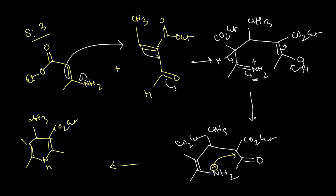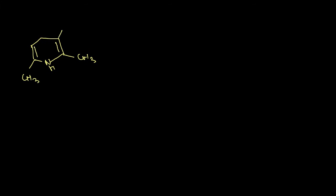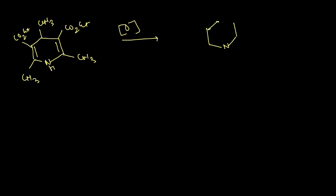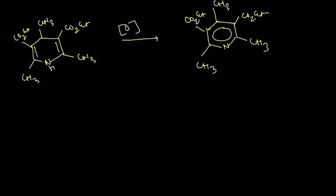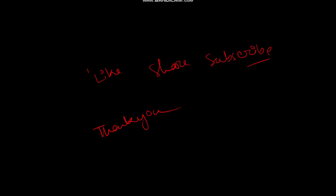With CO2Et groups on the ring, to aromatize the ring we need to oxidize it. After oxidation, we obtain the final Hantzsch pyridine product with NH, CH3, CH3, and CO2Et substituents. If this video was helpful, please like, share, and subscribe to the channel, and thank you for watching.